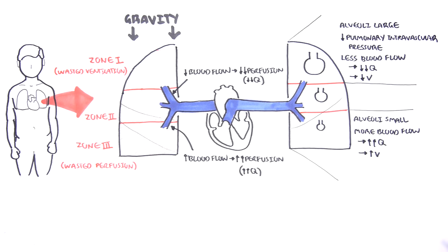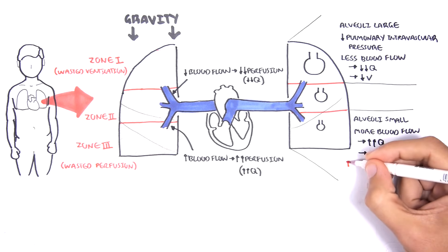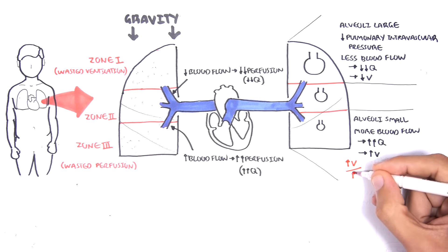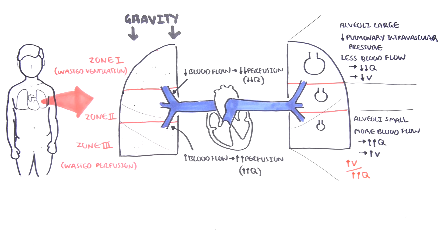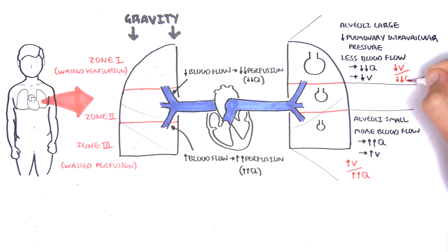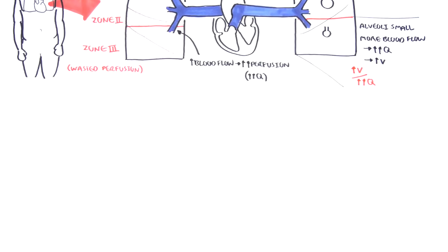We can create a ventilation-perfusion ratio using this concept. At the base of the lung, you have good ventilation and great perfusion. For the apex, you have not so good ventilation and pretty bad perfusion. This is in an upright position, and these differences in VQ ratio are thought to be primarily due to gravity, but other factors play a role, including different diseases.